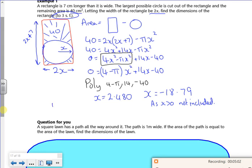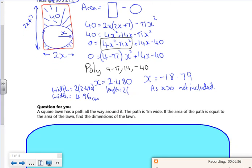So my width is 2 lots of 2.480. So the width, it's 3 sig fig, so it's going to be 4.96 centimeters. And then the length is 2 lots of 2.480 plus 7. So the length will be 11.96. Now remember it was to 3 sig fig. So the actual length to 3 sig fig.